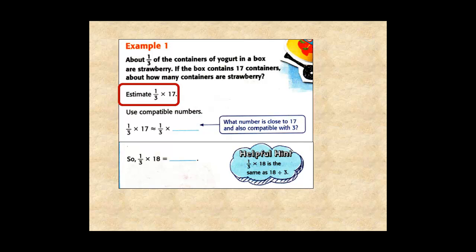Instead of a bar diagram, let's remember the last lesson. 1/3 × 17 is the same as 17 ÷ 3.